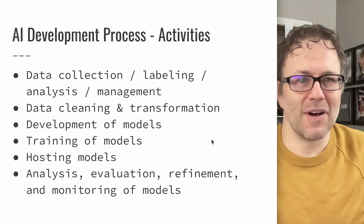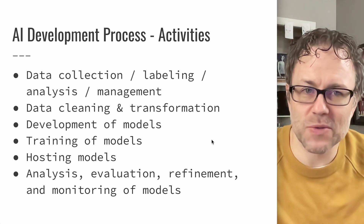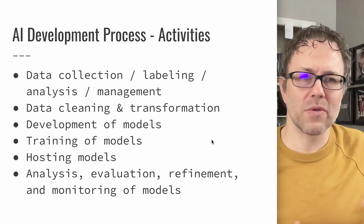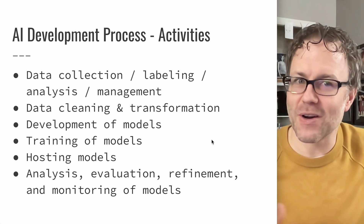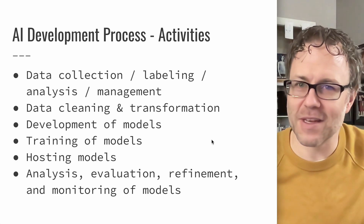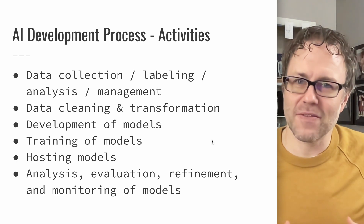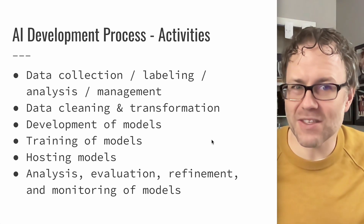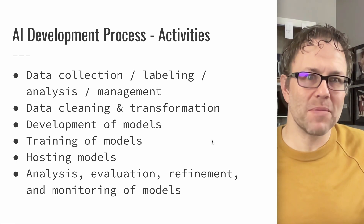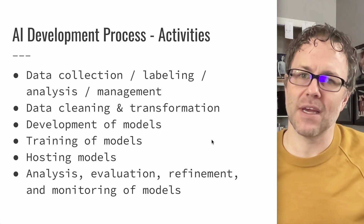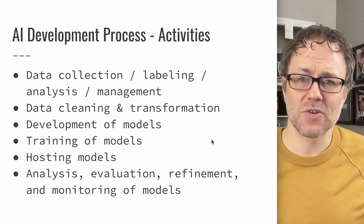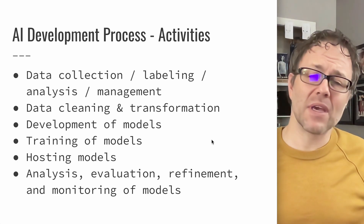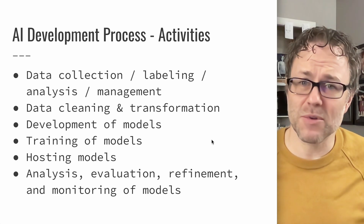This process involves a lot of different activities. The collection of data — for example, finding pictures of dogs and lizards — requires collecting and labeling all that data. Even with 20 images that can be time-consuming. You also have the process of data cleaning and transformation. For images, you have to consider whether they're the right size and detail — maybe higher or lower resolution images give better results.